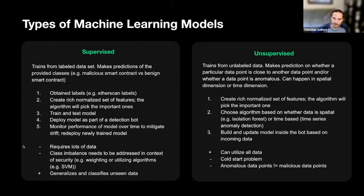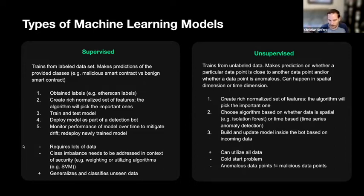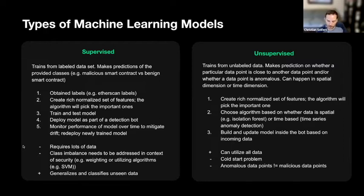This can happen in a spatial dimension. For instance, consider a smart contract. You could look at size, date, number of transactions the smart contract has received, and properties of the deployer. That becomes your dataset, and you learn the common properties of smart contracts being created — then identify outliers you're able to predict.